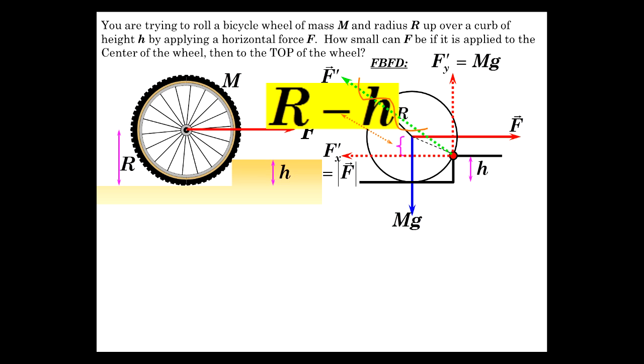Well, we don't have to find the pivot point force, but let's find the applied force needed to do this. So this radius arm about this pivot point through which this force acts is R minus h.